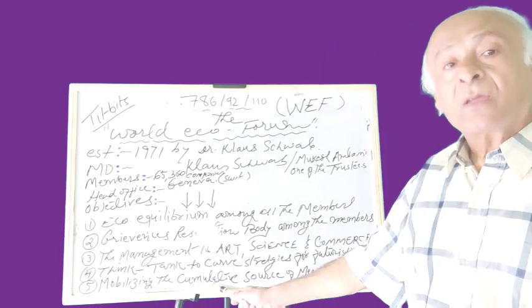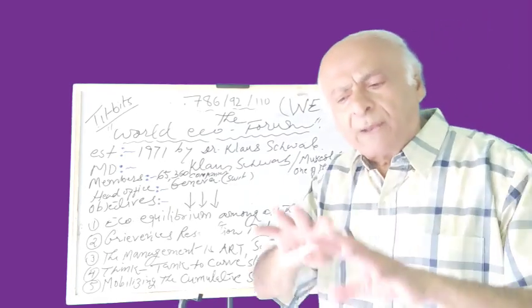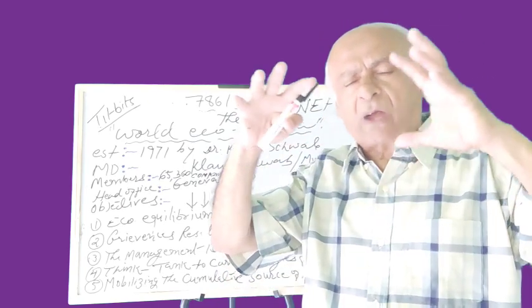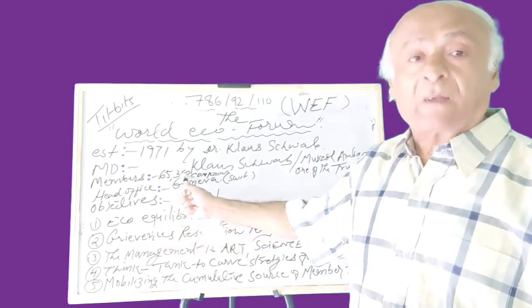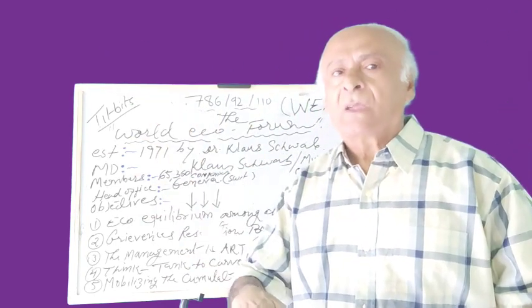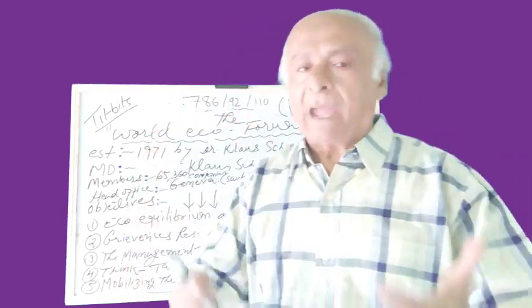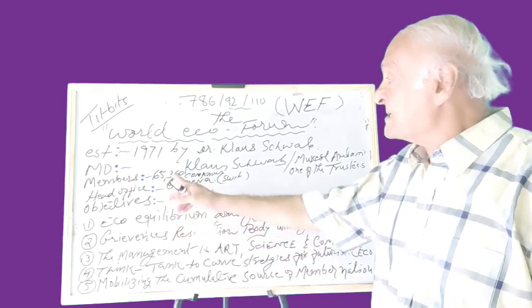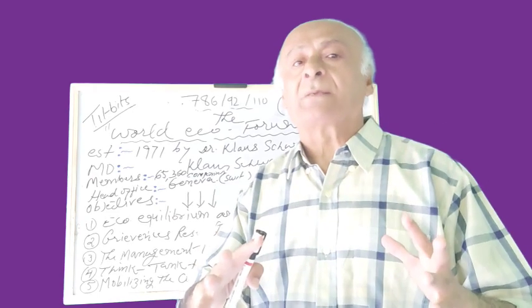Fifth: mobilizing the cumulative source of member nations. Mobilizing the cumulative sources, whatever the source is available. Because in the economic sense, in all 365 companies and 65 plus nations, they are going to cumulatively mobilize so that they can create a new strategy, new environment, new type of scenario, economic scenario in which these nations can profit, these nations can derive the benefit out of them, these nations can flourish economically.